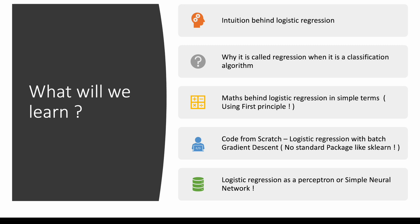Don't worry - as long as you know the basics of partial derivatives you should be able to understand. We'll explain everything clearly. After that we'll try to code it from scratch - not using standard packages like sklearn, but using numpy and pandas basic libraries. At the very end we'll try to understand why logistic regression is considered a simple neural network, very similar to a simple perceptron. So without further ado let's jump right in.